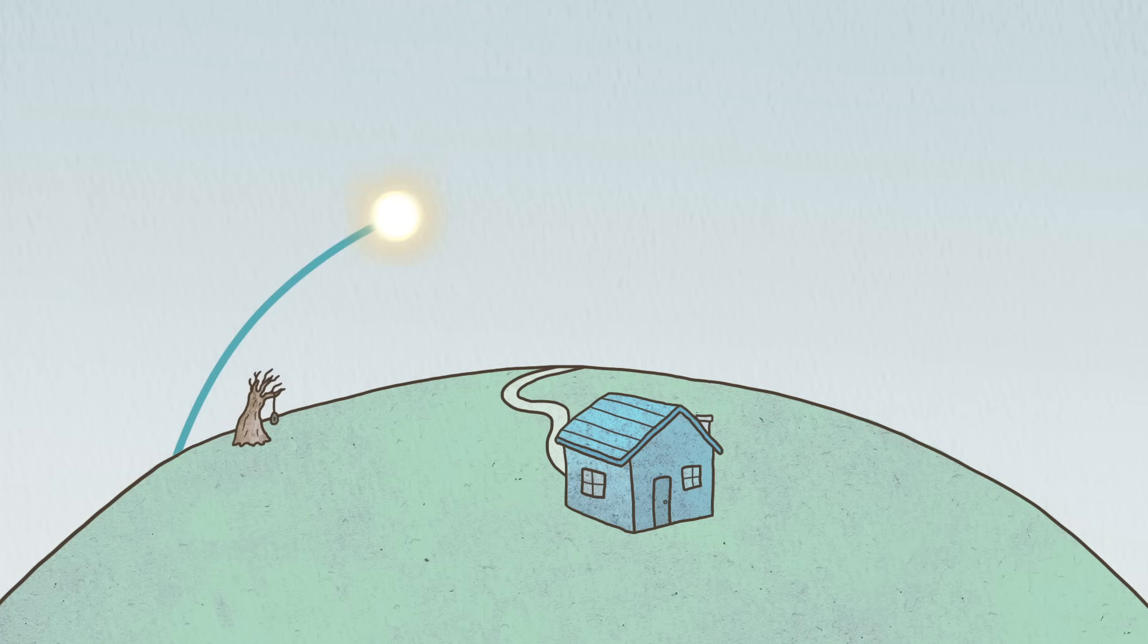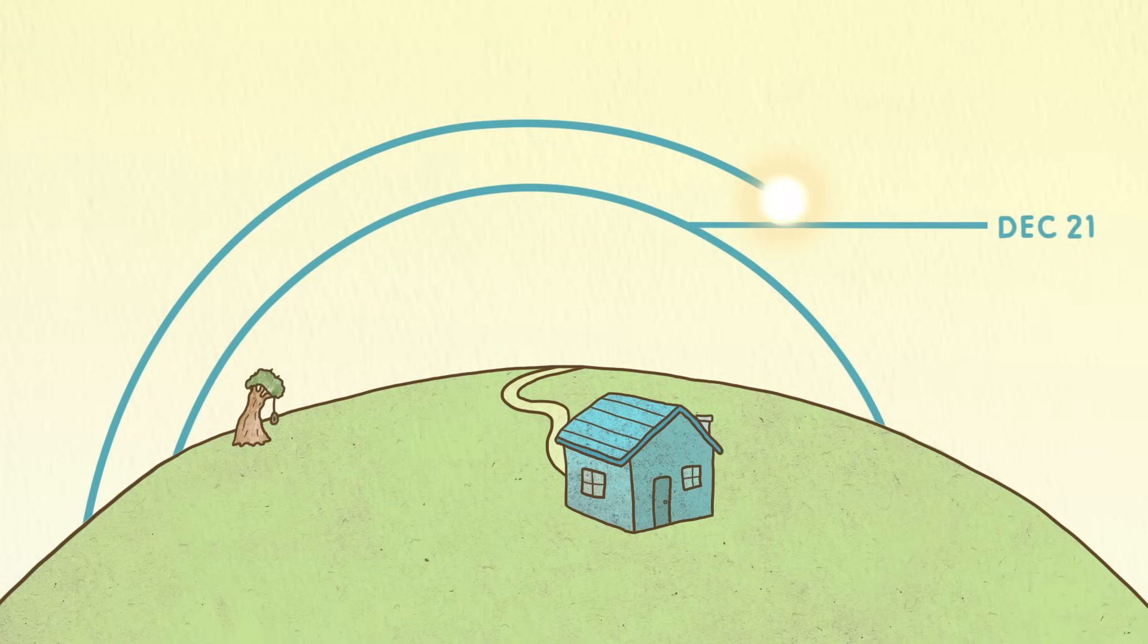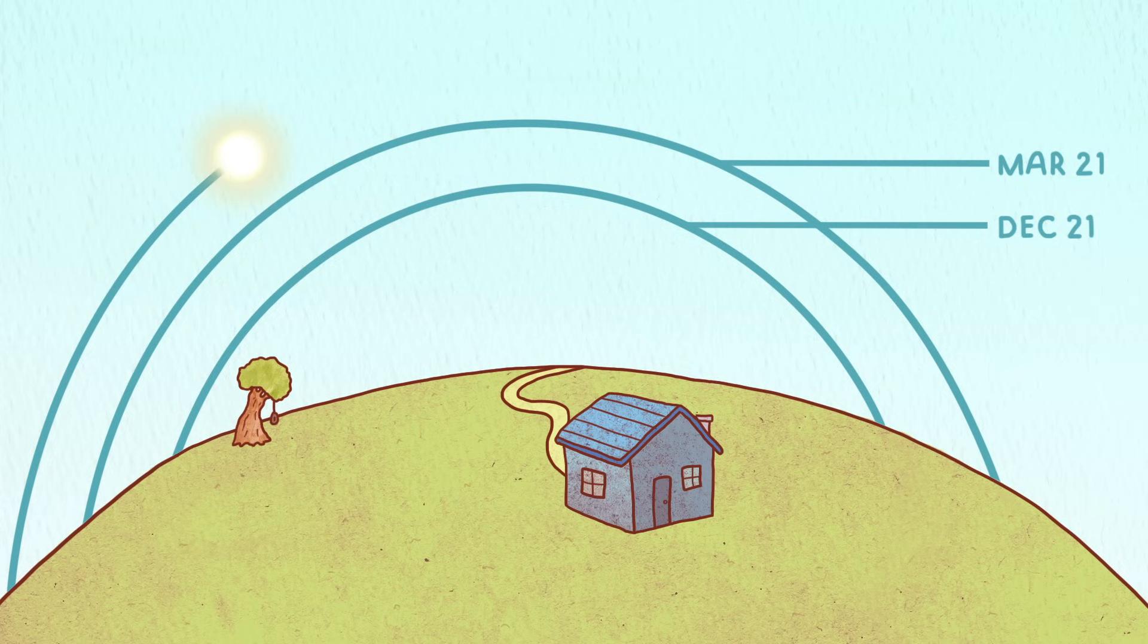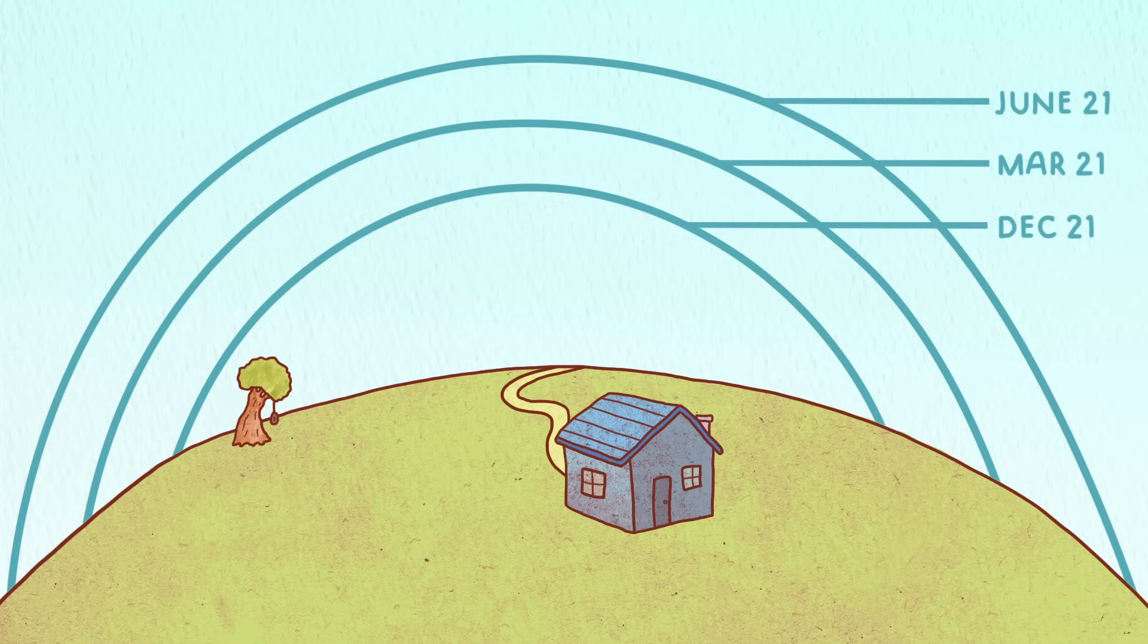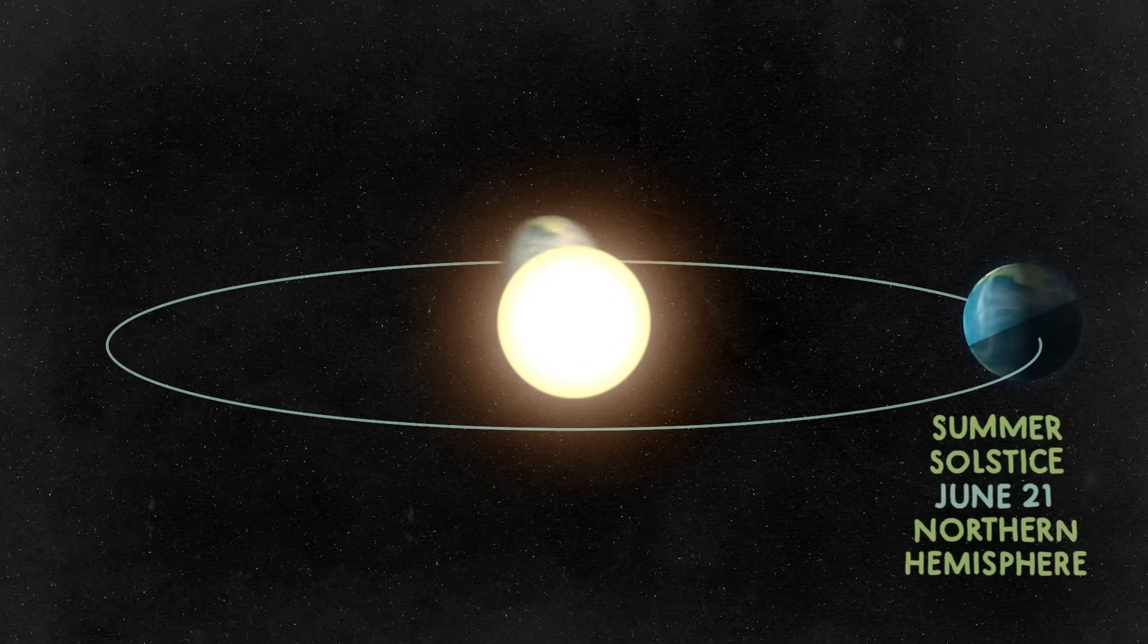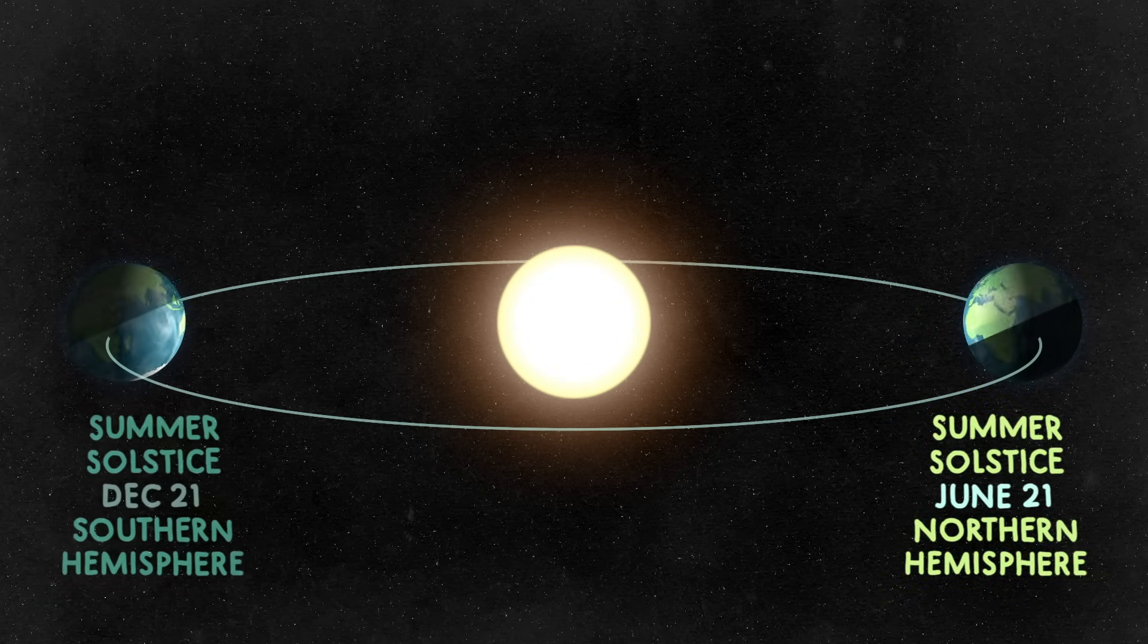The Earth is a sphere, and so the amount of solar energy an area receives changes based on how high the sun is in the sky, which, as you know, changes during the day between sunrise and sunset. But the maximum height also changes during the year, with the greatest solar height during the summer months and highest of all at noon on the summer solstice, which is June 21st in the northern hemisphere and December 21st in the southern hemisphere.